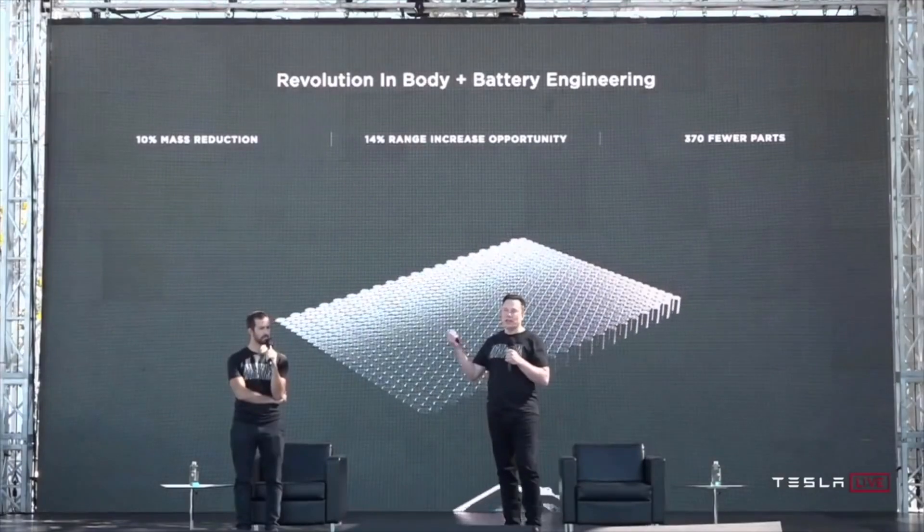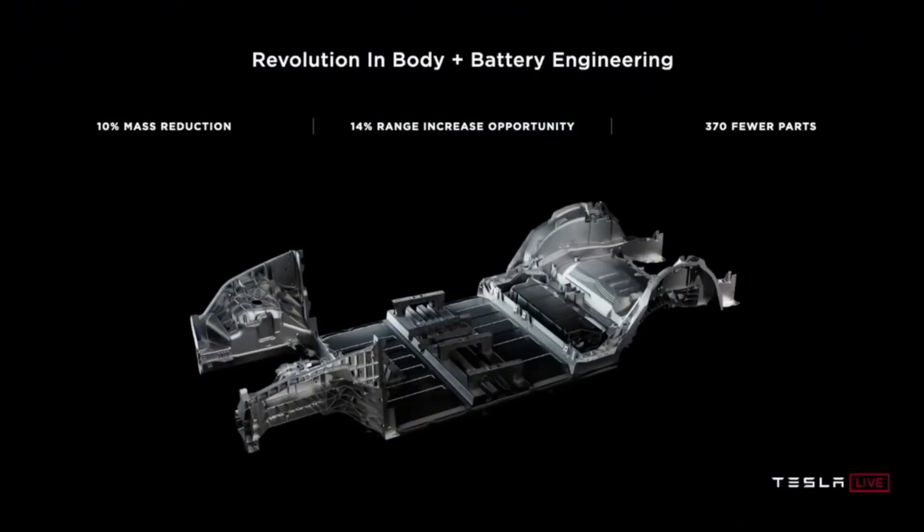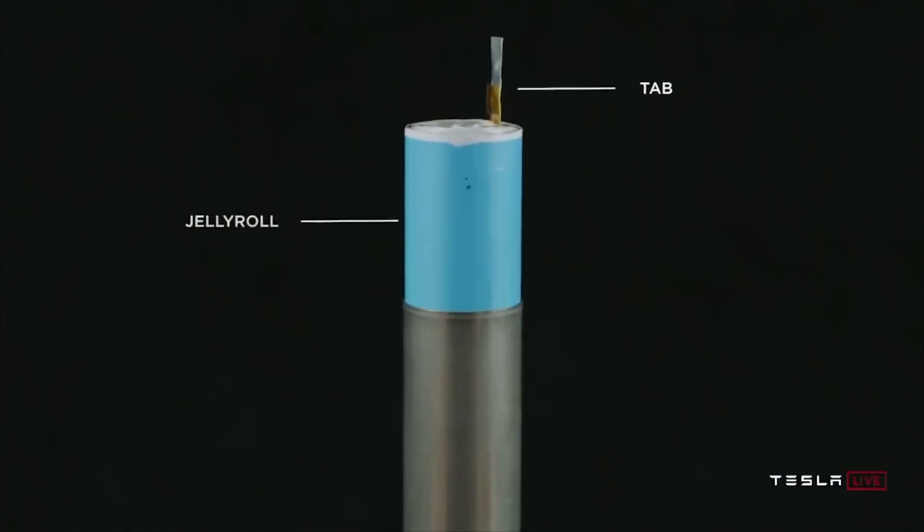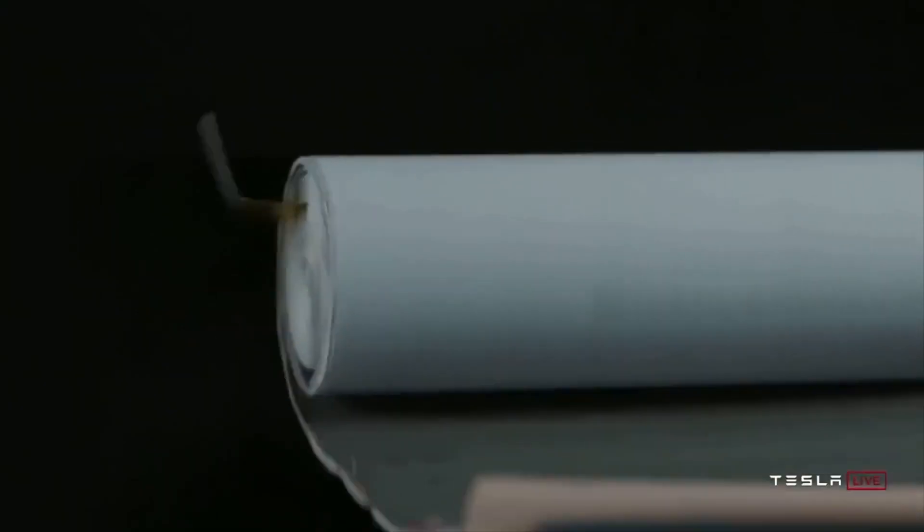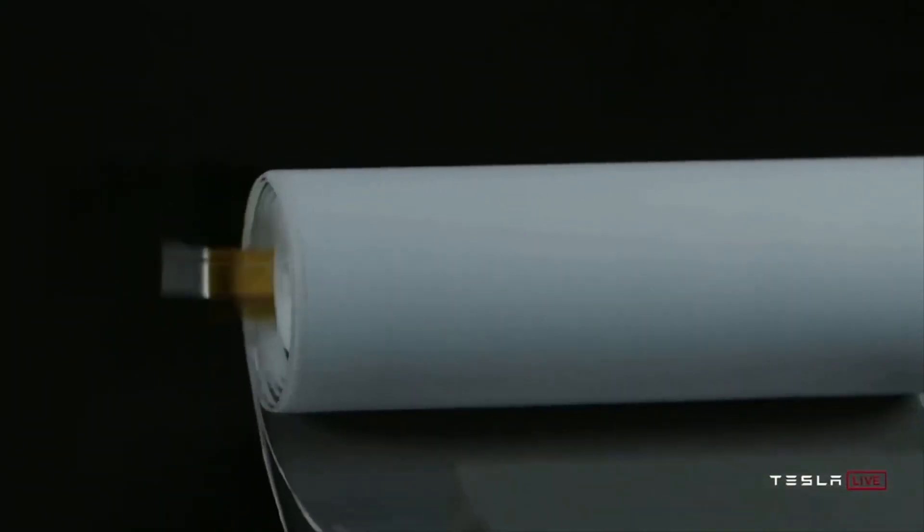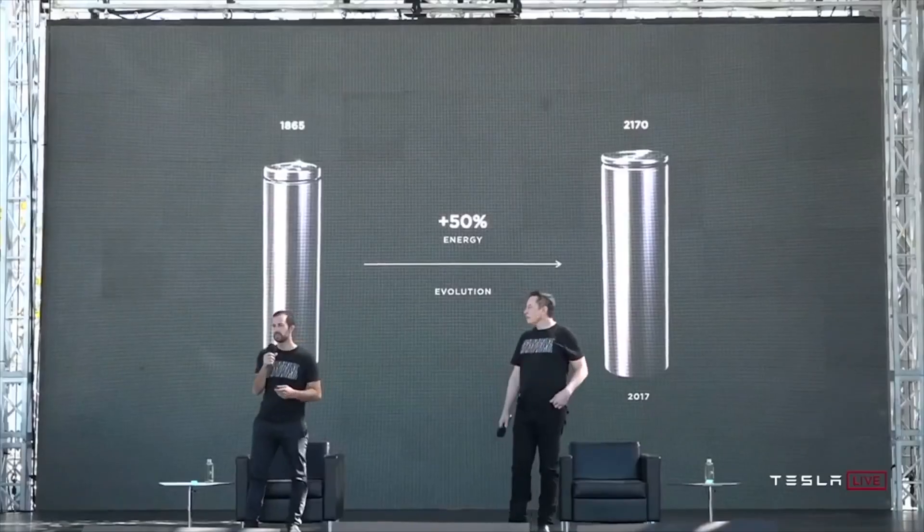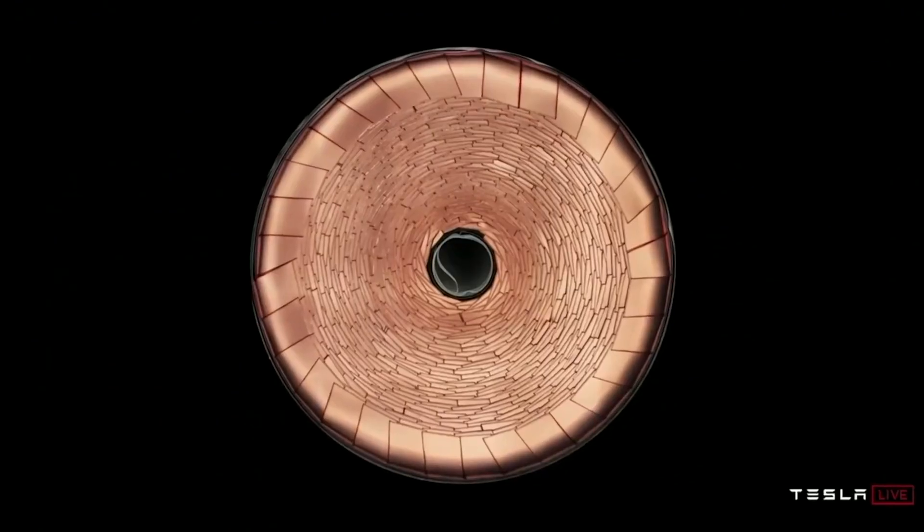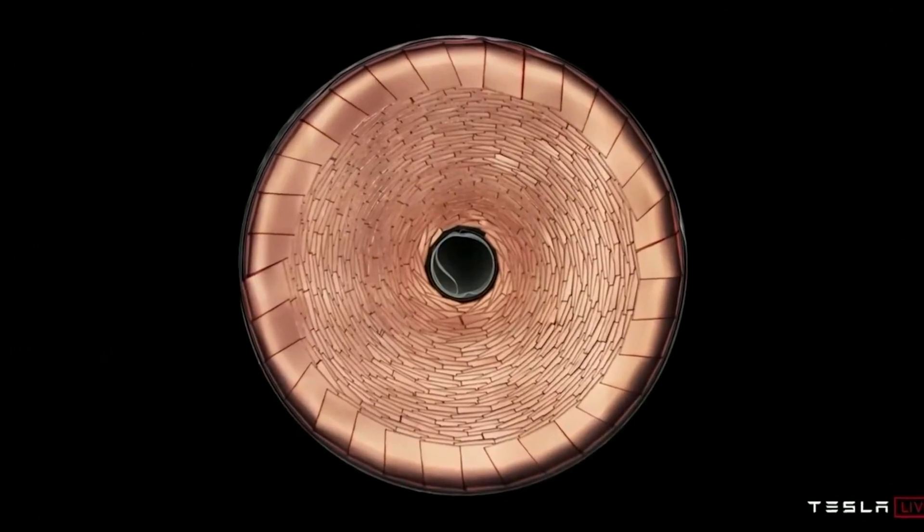We have successfully validated performance and lifetime of our 4680 cells produced at our Kato facility in California. We are nearing the end of manufacturing validation at Kato. Field quality and yield are at viable levels and our focus is now on improving the 10% of manufacturing processes that currently bottleneck production output.